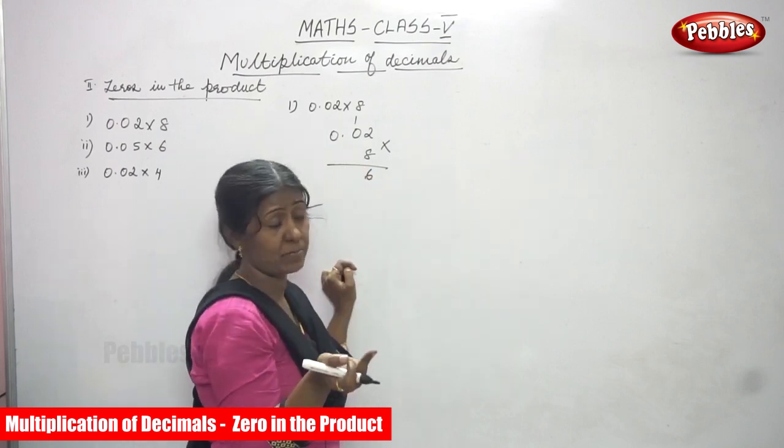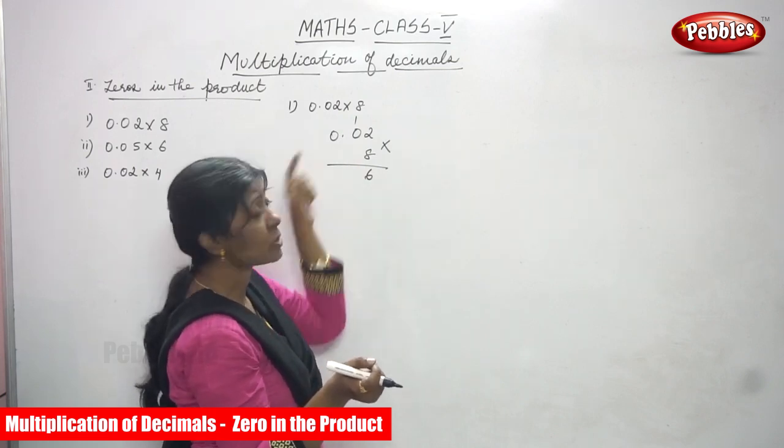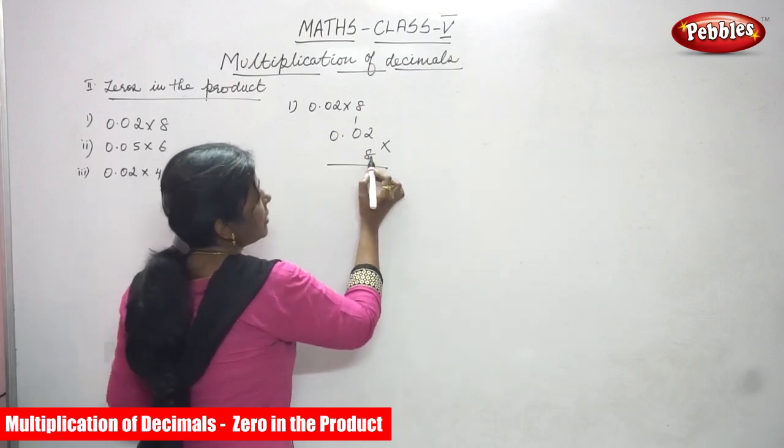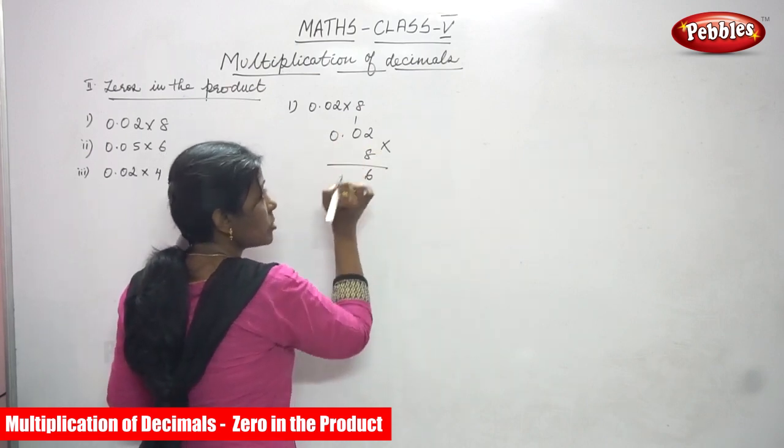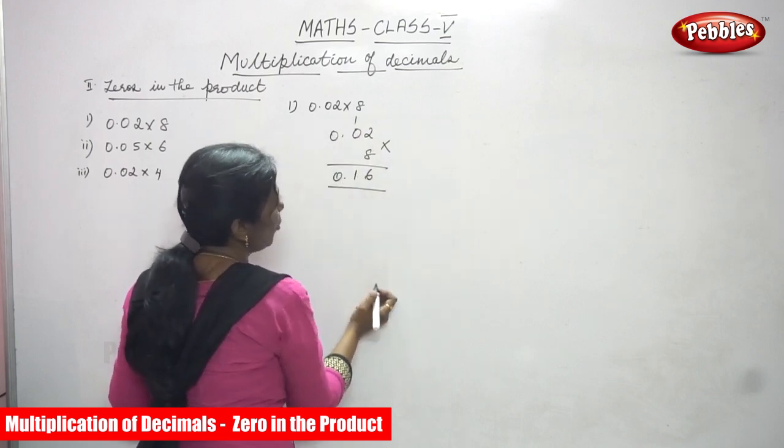So multiply by 8. 8 into 2 is 16. The 6 remaining, the carry over goes to the 10th place. So 8 into 0 is 0. So 0 plus 1, you can get 1. After that you can get what? 0.16.